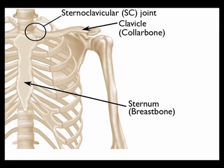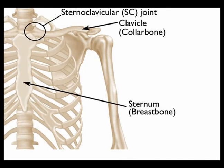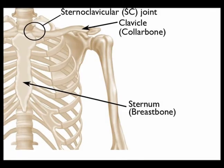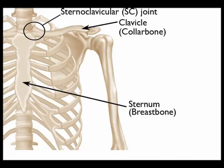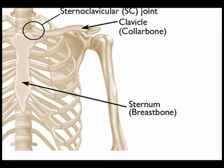The appendicular skeleton is constructed for a greater range of motion and locomotion generation when compared to the axial skeleton. The appendicular skeleton directly articulates with the axial skeleton at the sternoclavicular joint, where the sternum of the axial skeleton articulates with the clavicle of the appendicular skeleton.